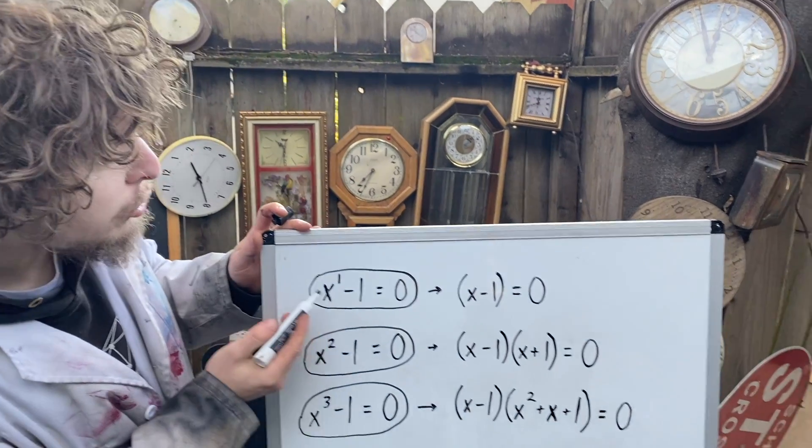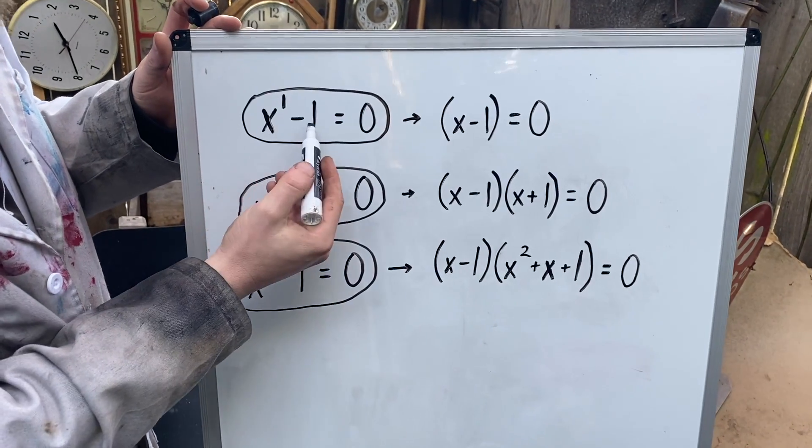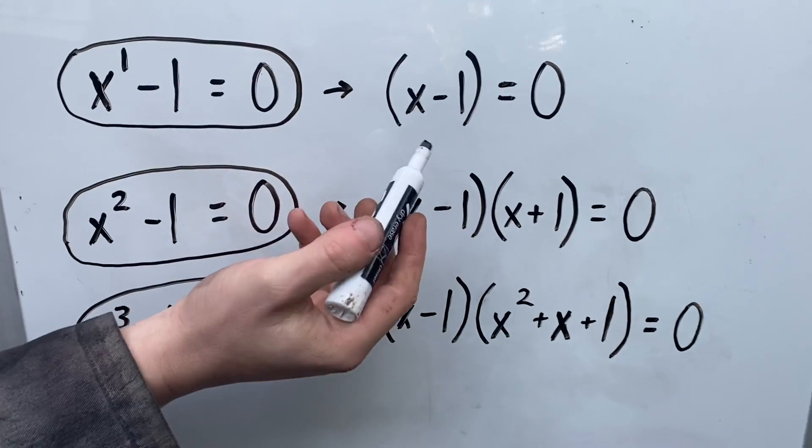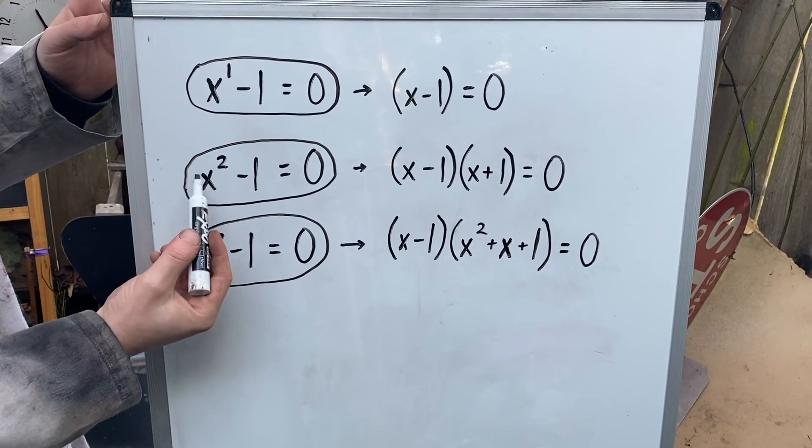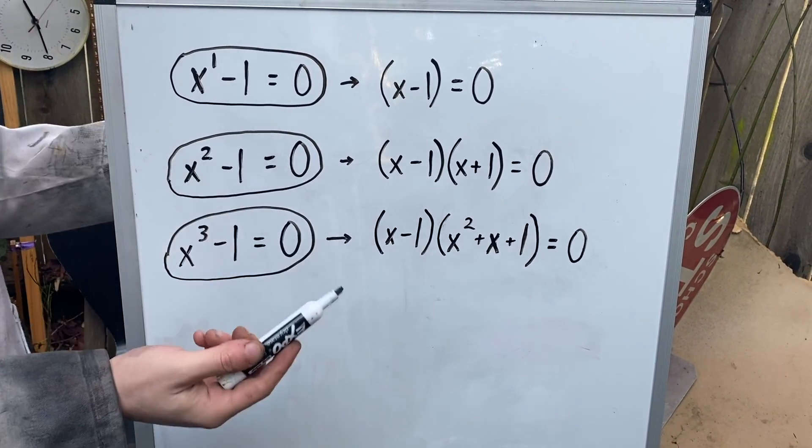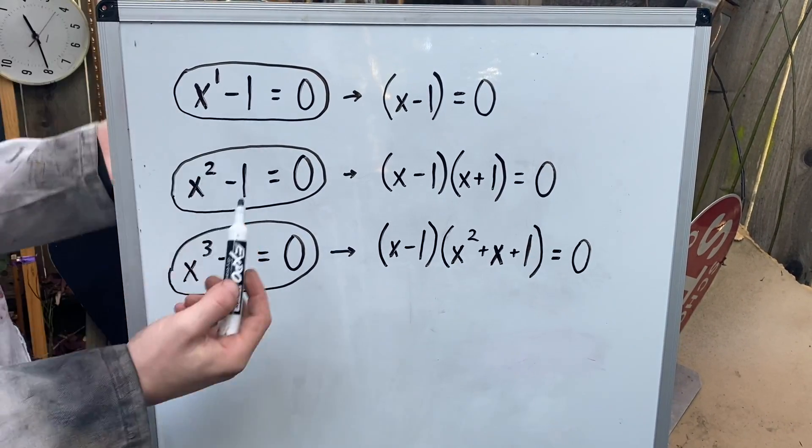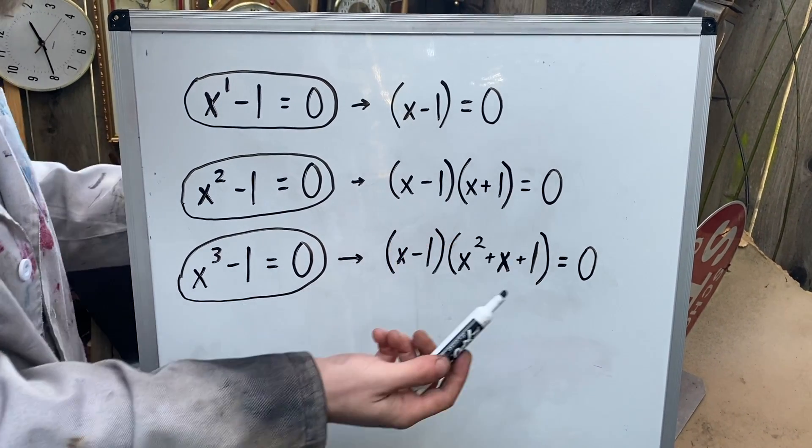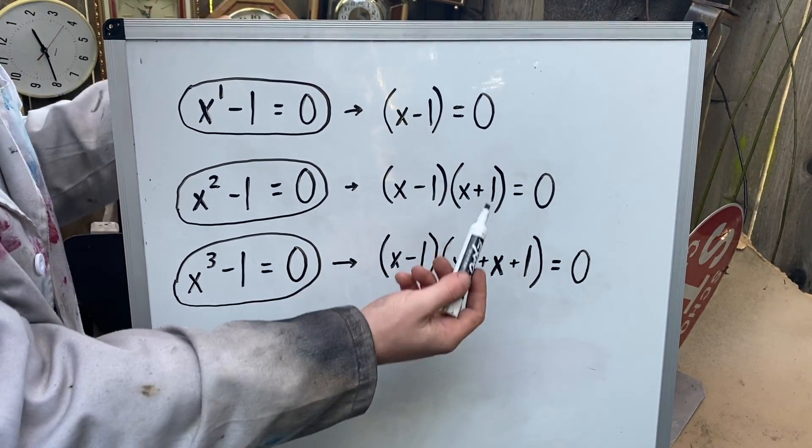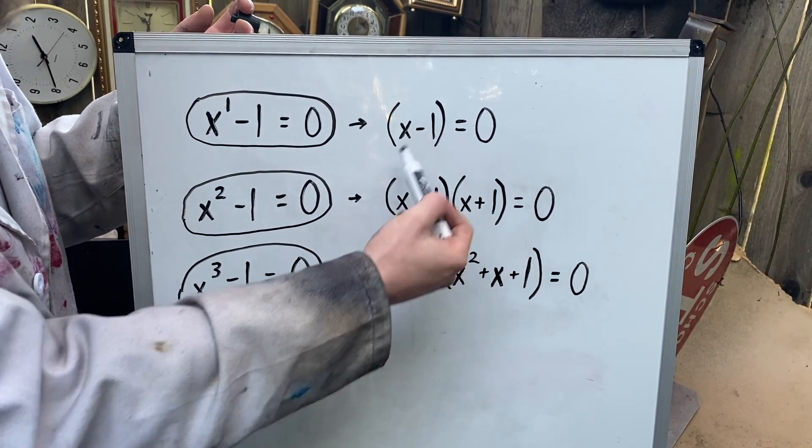To figure that out, we could try and factor these expressions. And the first one, you don't need to factor. I just put parentheses around that to make it look like the later cases. But with x squared minus one, you may remember that this little bit, x squared minus one, can always factorize into x minus one times x plus one. And if you multiply those together, you'll see we get the x squared minus one, and the other bits cancel out.